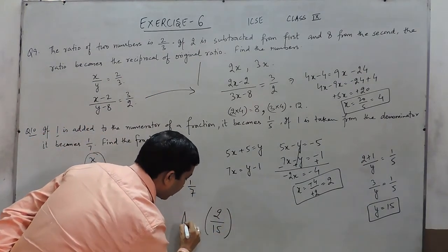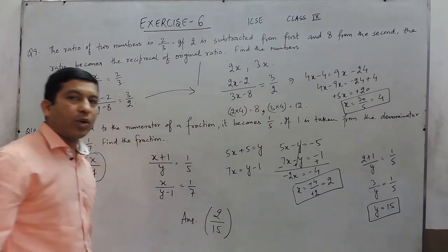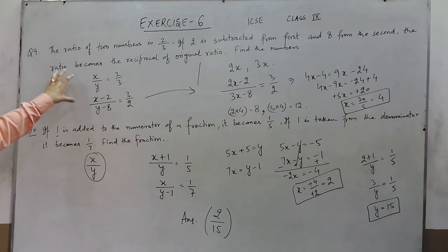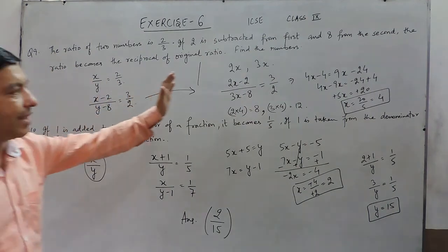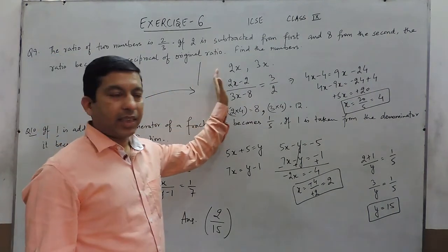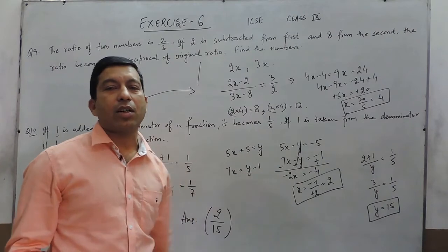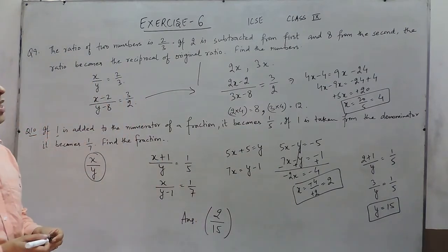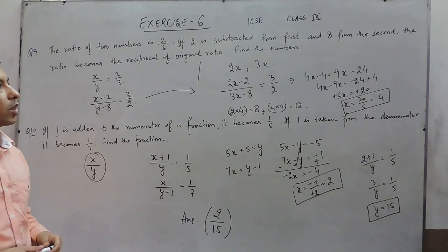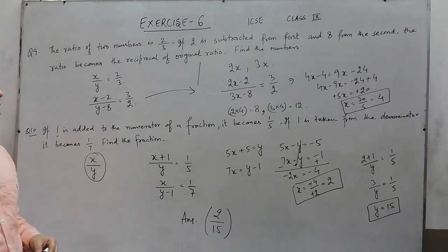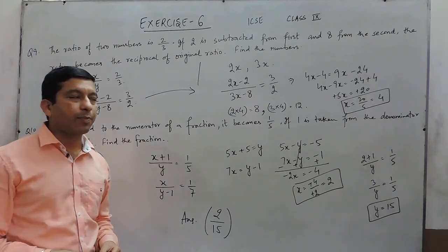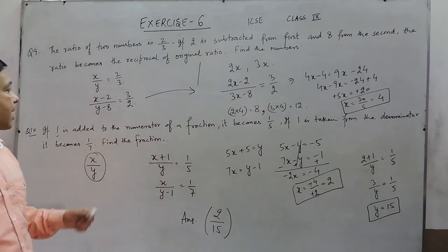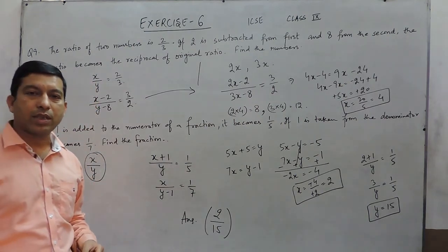So we can say that the original fraction was 2 upon 15. This was the answer to this question. In your exam when you solve question number 9 using the single-variable method, it will be taken as the correct solution, because the question does not specify whether to use one or two variables. If you have any problems, you can contact or email us. In the next class we will talk about question number 11 onwards. Thank you.